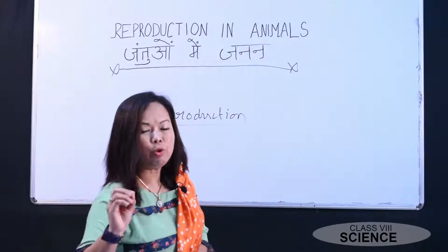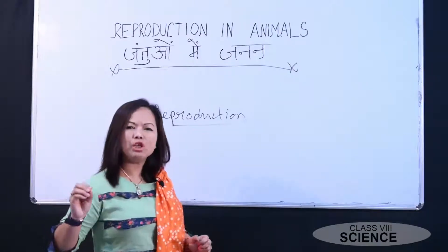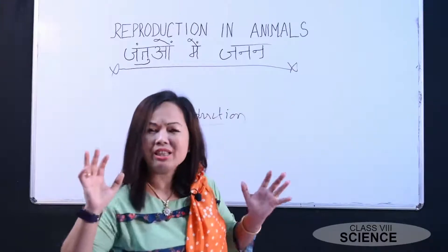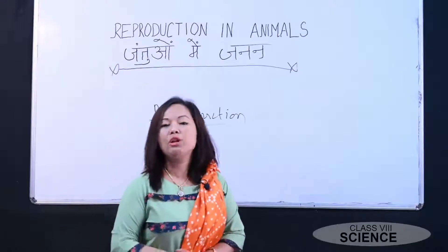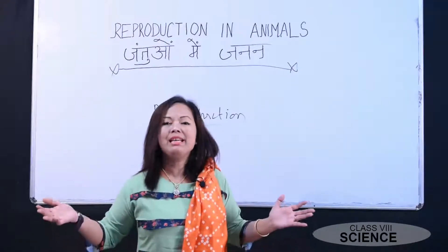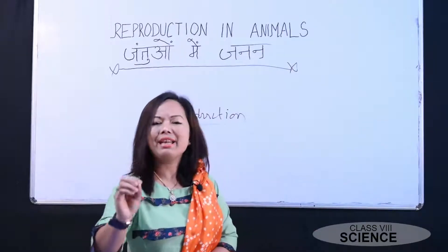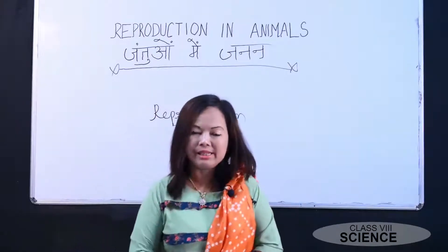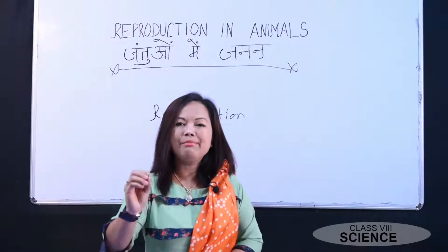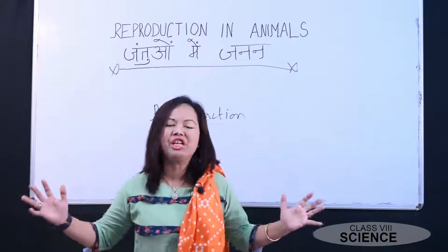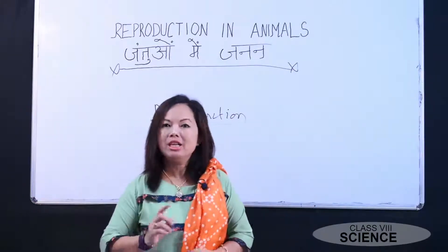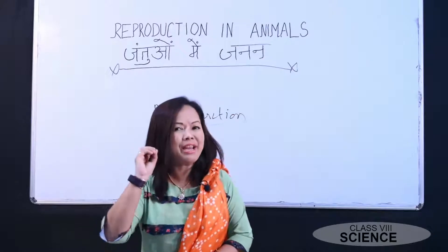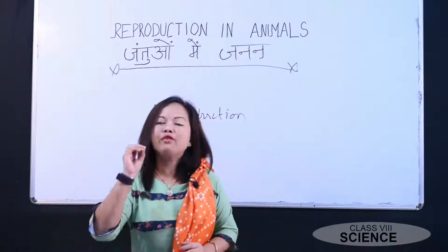In your class 8 science, reproduction has been given a big chapter. If it has been created in a single chapter, that means it has a very important role in the survival of living organisms. Reproduction is a process by which new organisms of the same species are formed from the existing species. Now let me tell you why reproduction is so important — it is very important for maintaining the continuity of species on this earth.